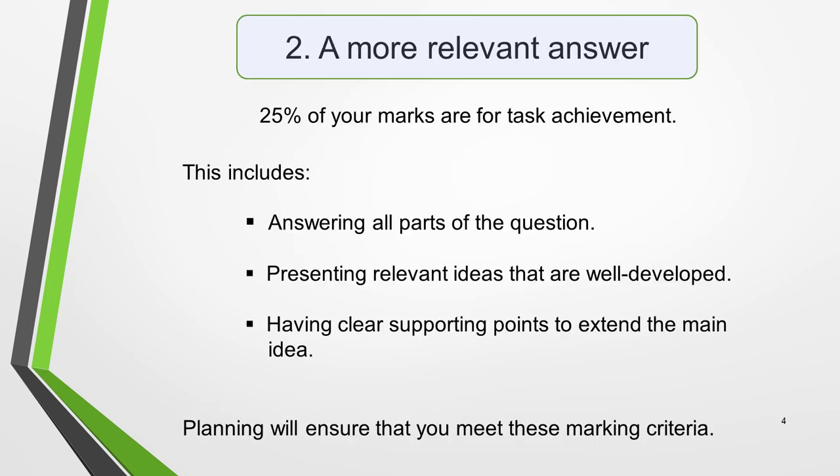Planning also results in a more relevant answer. Remember, 25% of your marks are for task achievement. This includes answering all parts of the question, presenting relevant ideas that are well developed, and having clear supporting points to extend the main idea. Not answering all parts of the question is a particularly common mistake in the IELTS writing task. Part of the planning process involves thinking up ideas to include in your essay. Taking time to analyse the question and focus on generating a few key ideas with relevant examples will ensure that you answer the question fully.